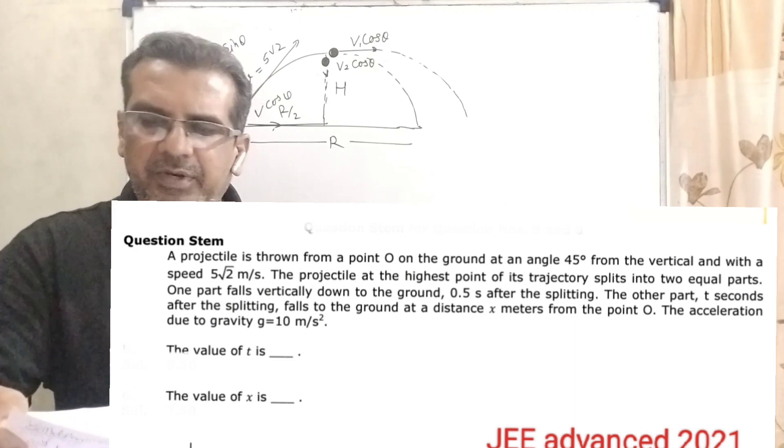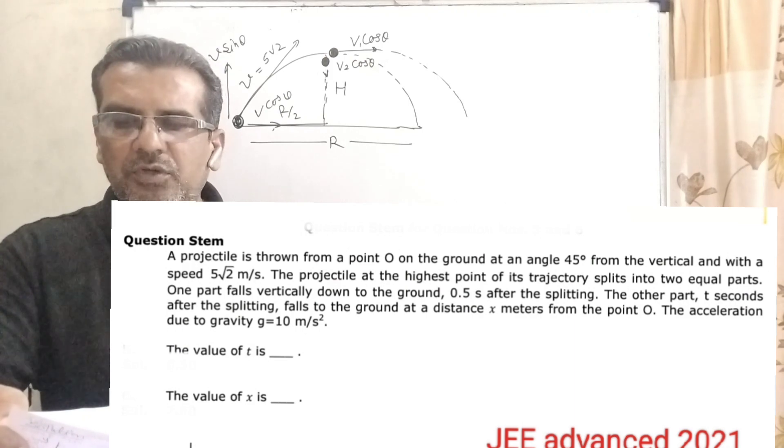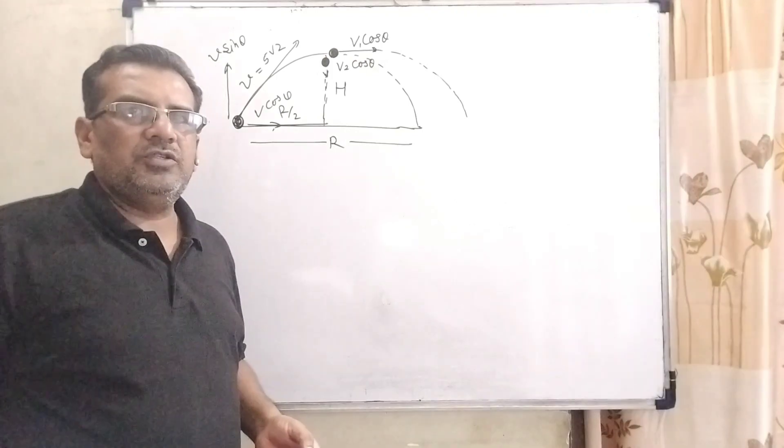Here we have to find two things. First, the value of time period t. And second, the value of x in meters. This question is asked in JEE Advanced 2021.